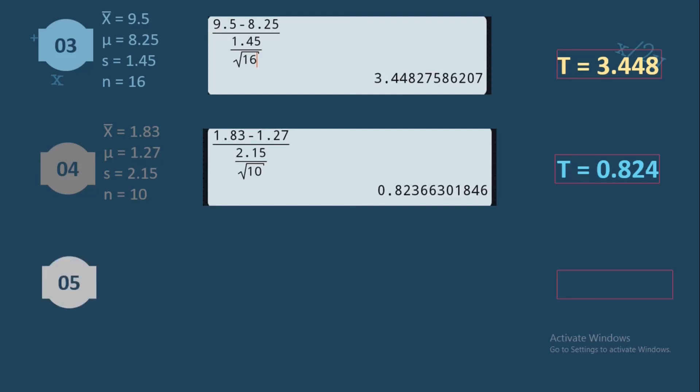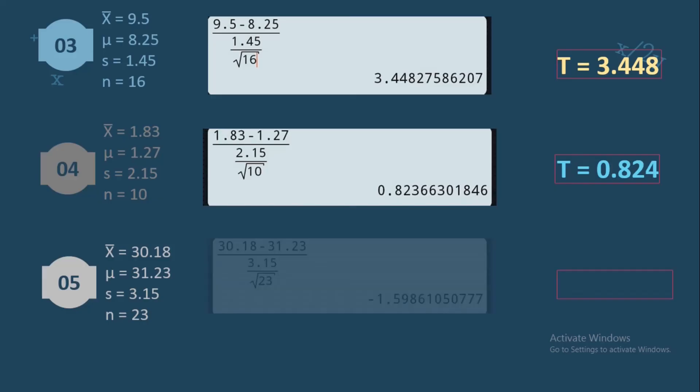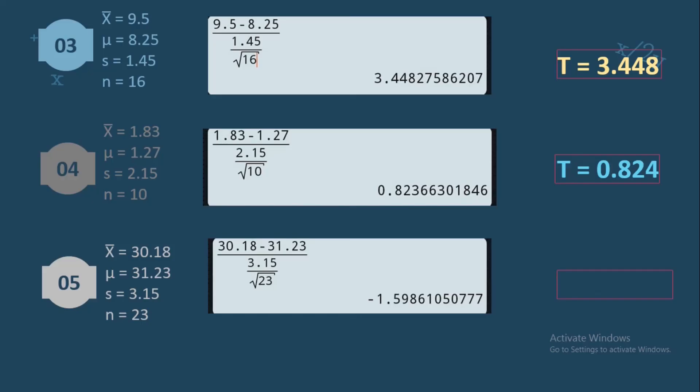For our final item on T value: the sample mean is 30.18, the population mean is 31.23, the sample standard deviation is 3.15, and the sample size is 23. Substituting: 30.18 minus 31.23 over 3.15 divided by the square root of 23, which equals negative 1.5986. Rounding off to the nearest three decimal places, our T value is negative 1.599.